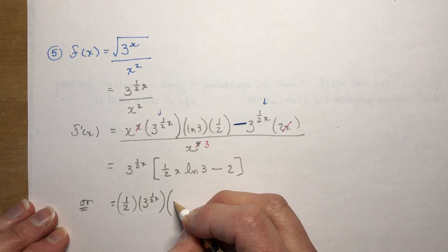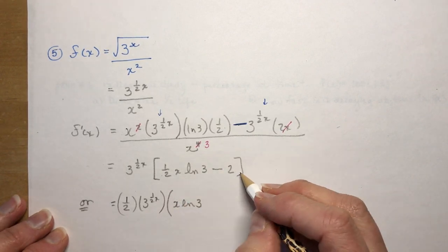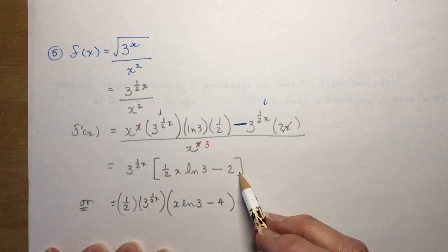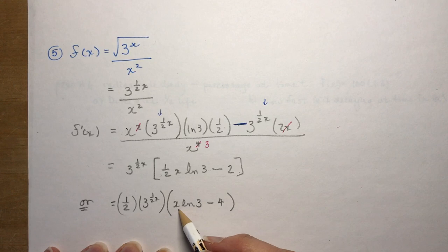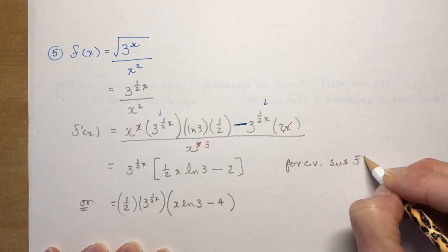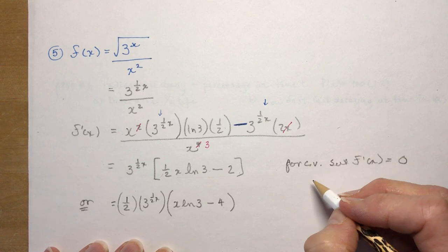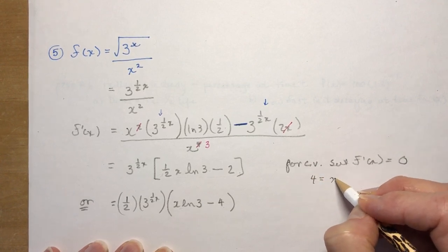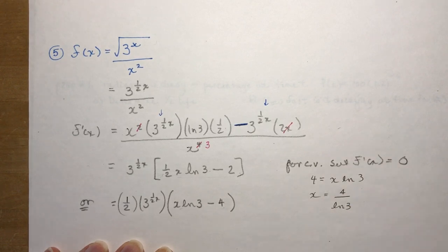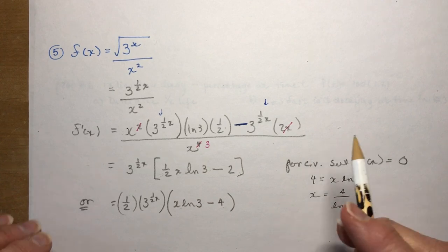I'll write that one here just for another example. You're still going to get the same answer. If I take out another half here, so I would have a half times 3 to the 1 half x, so far so good. And in here, I would just have x ln 3, and 2 divided by half would be minus 4. Now, it doesn't matter. If you didn't take that half out and you had to set this to 0, you would still get the same solution. So if I want to solve for this, I'd say for critical values, don't forget, set f prime x equal to 0. Hopefully, when you're doing your test, you hear my voice telling you to do this. 4 is equal to x ln 3. So x is equal to 4 divided by the ln of 3.